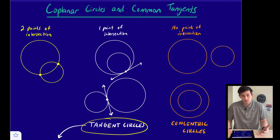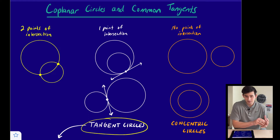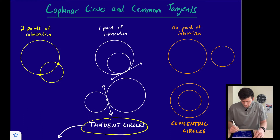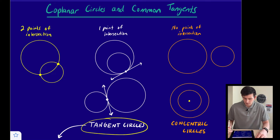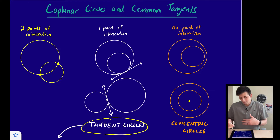Lastly, our two circles could not intersect, and this could also look two ways. We could have two circles that are just next to each other, or we could have two circles where one is inside the other — those would be concentric circles, meaning they share the same center point. We could also have one circle inside another where they are not concentric, because the centers of those two circles would not be the same.